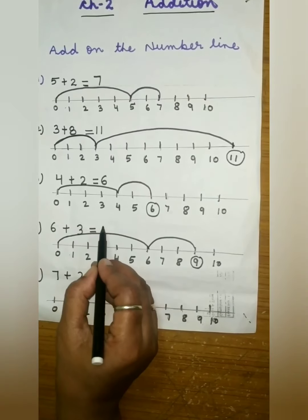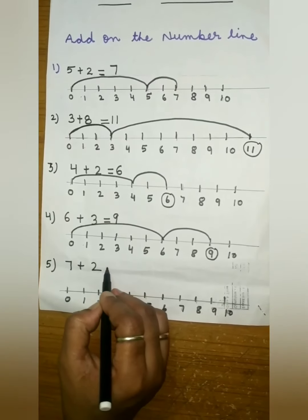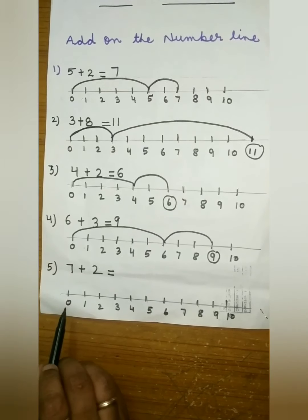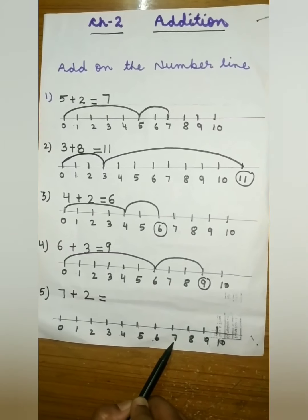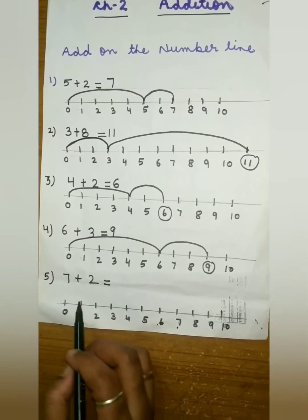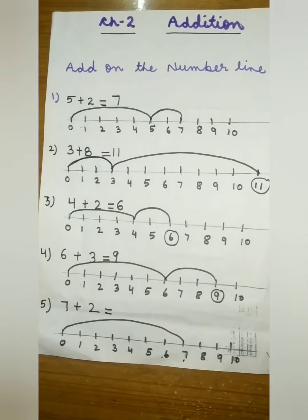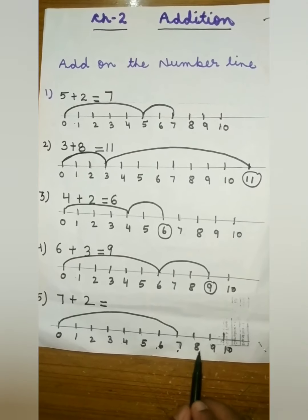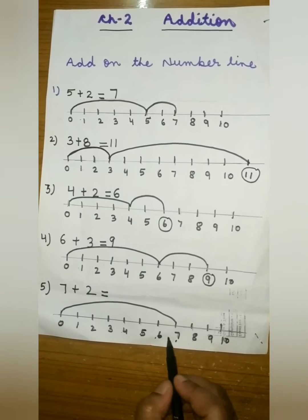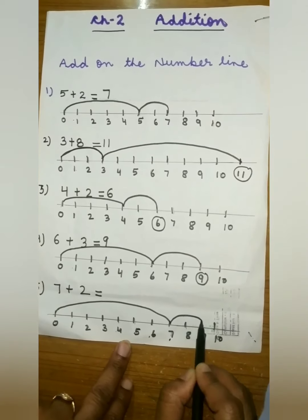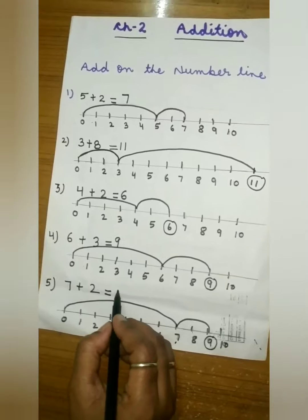Circle the nine here and write nine here. The next example is 7 plus 2. From zero, count seven numbers: one, two, three, four, five, six, seven — jump from zero to seven. Now from seven count two numbers: eight and nine — jump from seven to nine. The answer is nine. Circle nine here and write nine here.